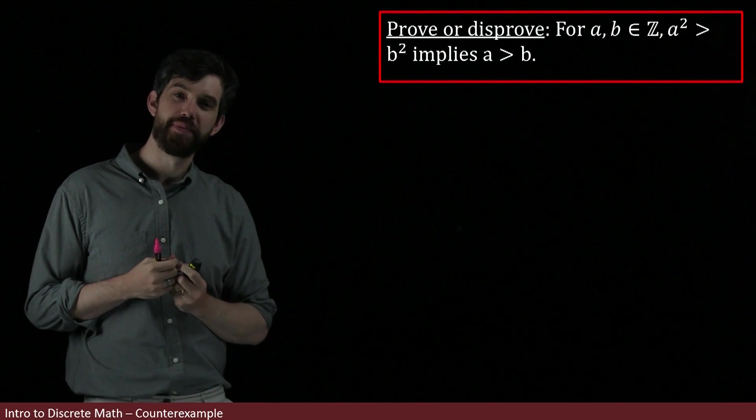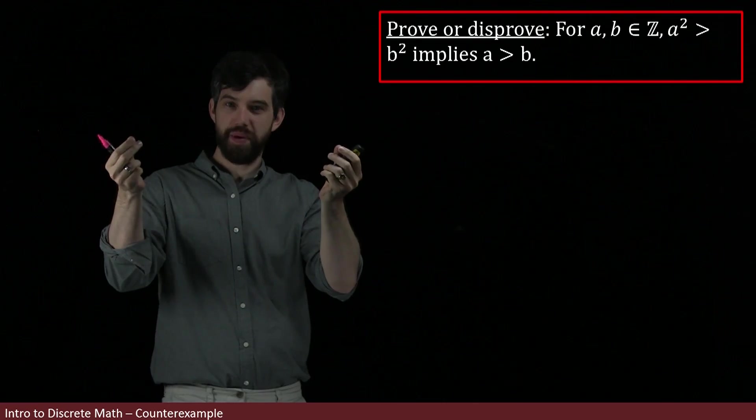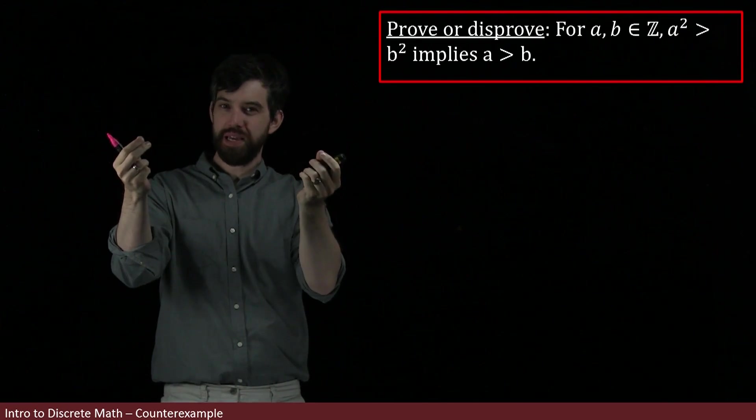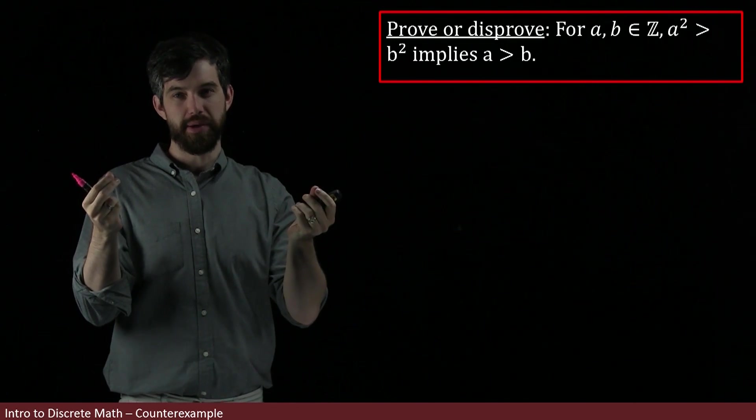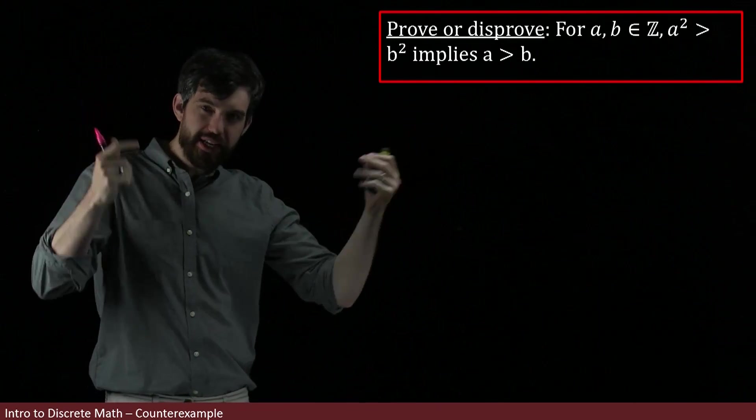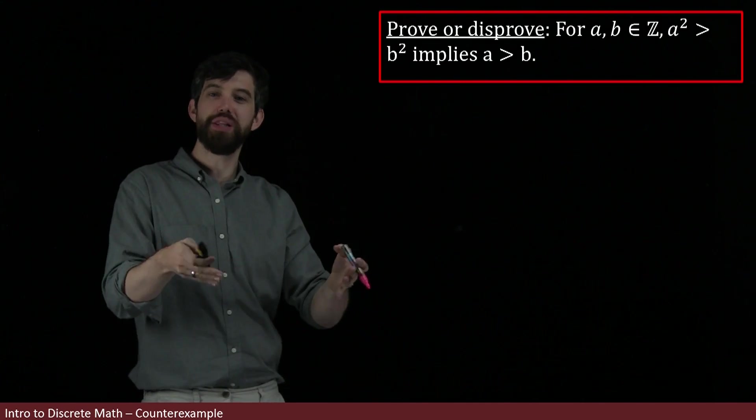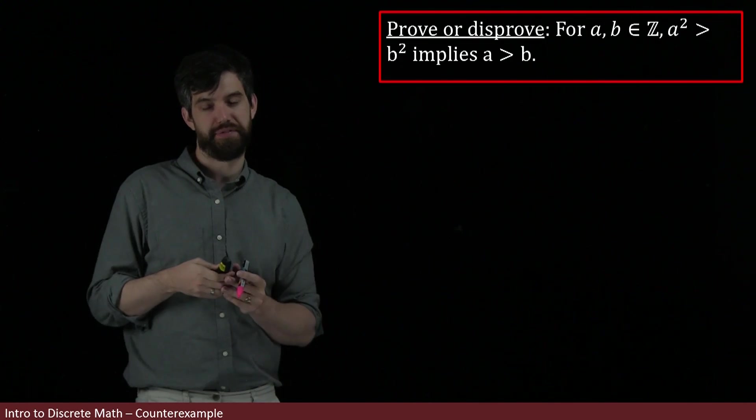Here we have some claim. It's the claim that if I take a pair of integers, an a and a b, then the a squared is bigger than the b squared forces the a being bigger than the b. Now, when I first see this, I don't know whether this particular claim is true or false. Let me just do a little bit of playing around and see if anything sort of reveals itself to me.